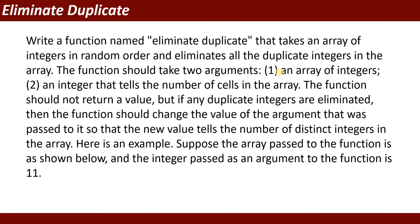Eliminate duplicate means we will write a function named eliminate_duplicate that takes an array of integers in random order and eliminates all the duplicate integers. The function takes two arguments: an array of integers, and an integer that tells the number of cells in the array. The function should not return a value, but if duplicates are eliminated, it should change the argument value to reflect the number of distinct integers in the array.